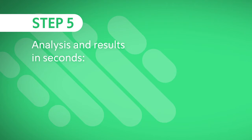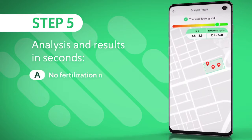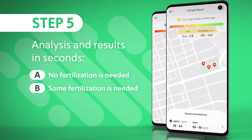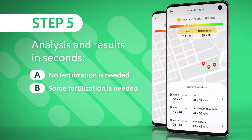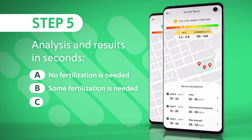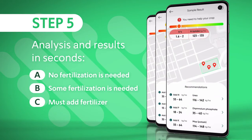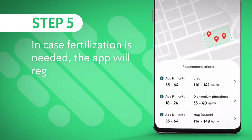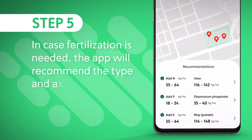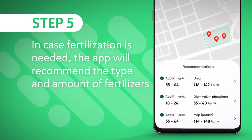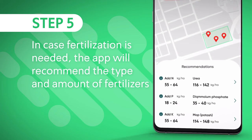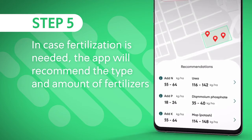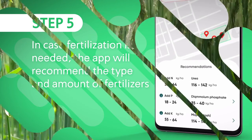Results can be one of three. A: no fertilization is needed. B: some fertilization is needed. C: you must add fertilizer. In case fertilization is needed, the app will recommend how much of each element — NPK — needs to be added, and also what fertilizers can be used.